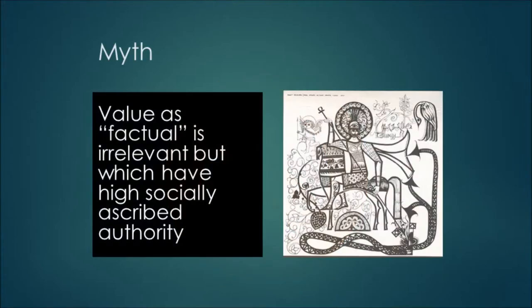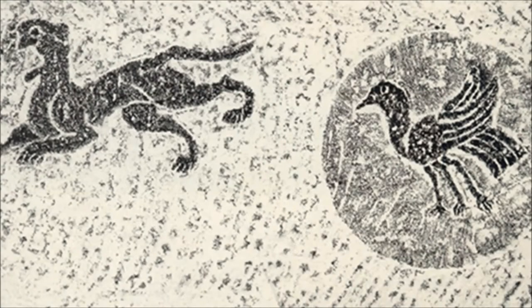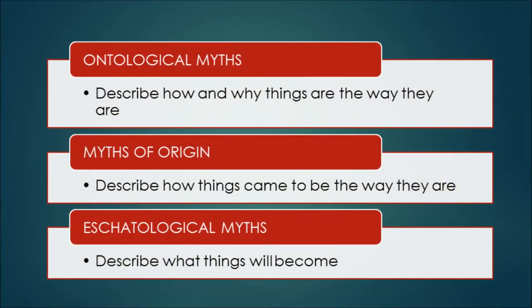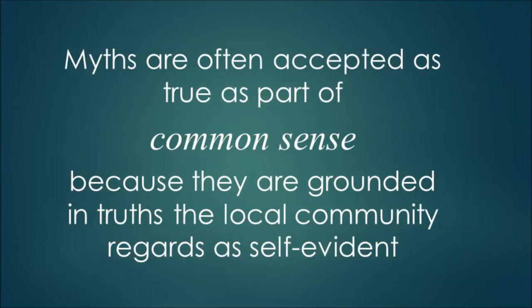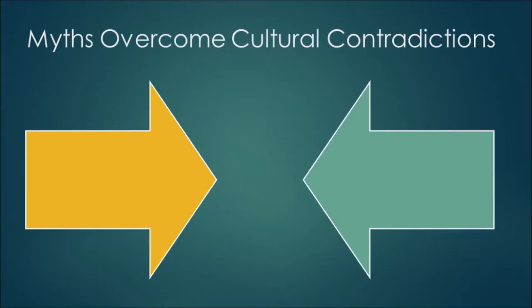Myth is often used in everyday speech to refer to something that is not true, but this is not the way it is used in anthropology. Myths are stories whose truth values may be ambiguous, but which have a high socially ascribed authority. Myths are especially valued because of their capacity to explain things. Myths are sometimes classified by the kinds of things they explain. Ontological myths explain how the world is and what kinds of things are possible. Myths of origin explain how things came to be the way they are. And eschatological myths explain what they will become and how. Myths can also include stories accepted as part of common sense or grounded in what the local community regards as self-evident.